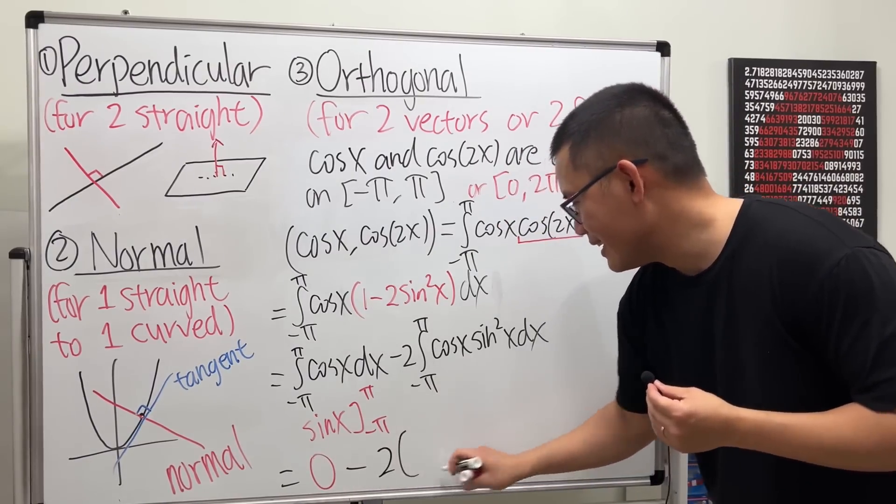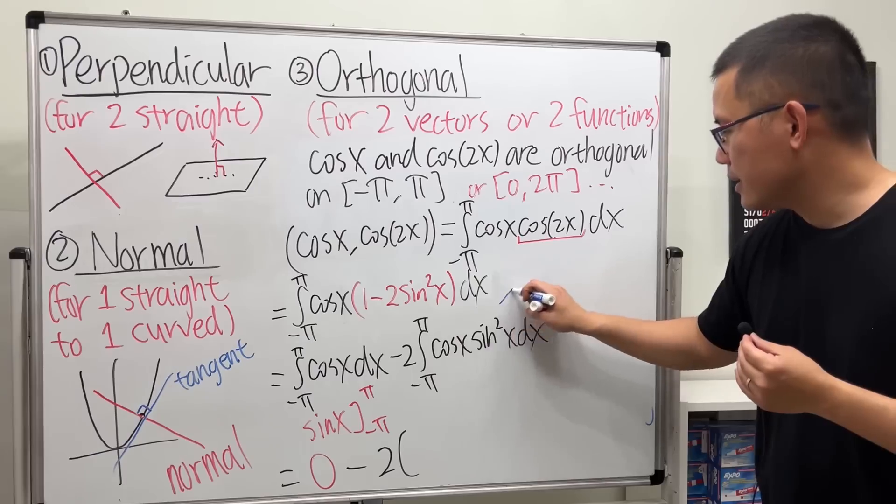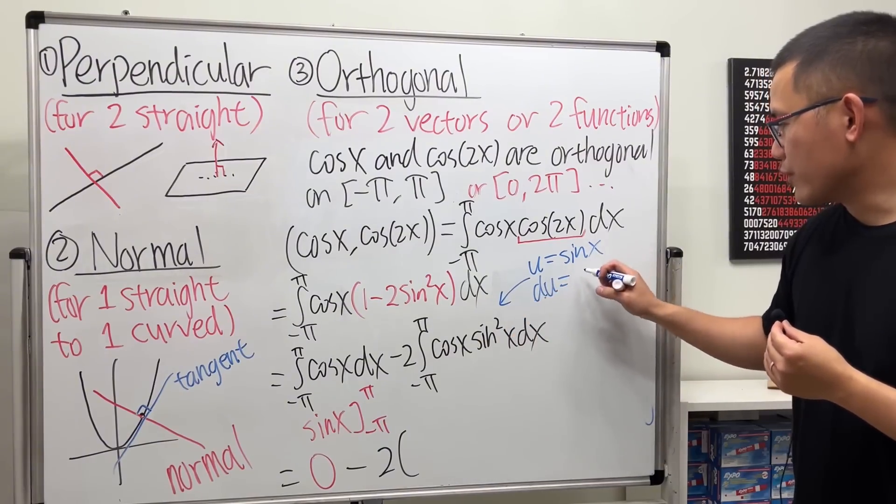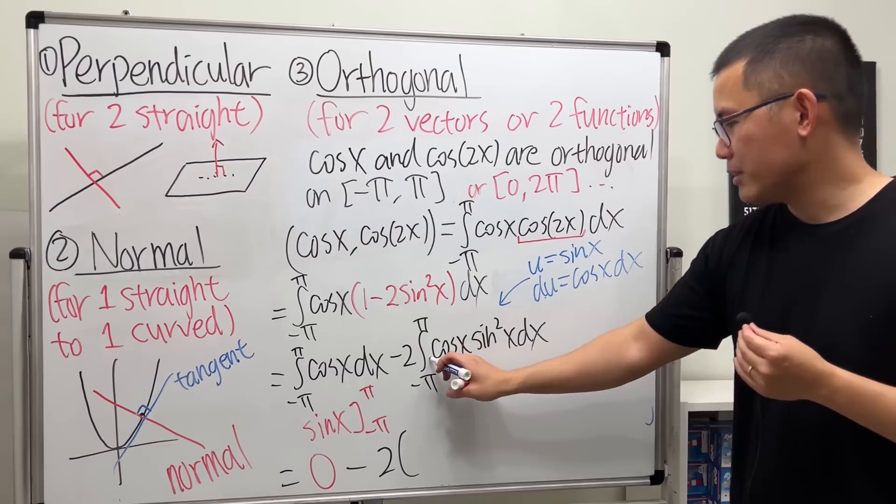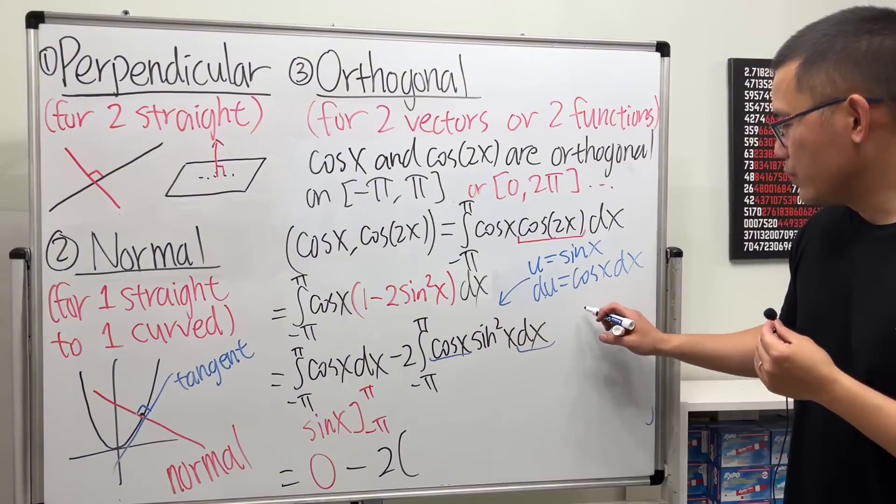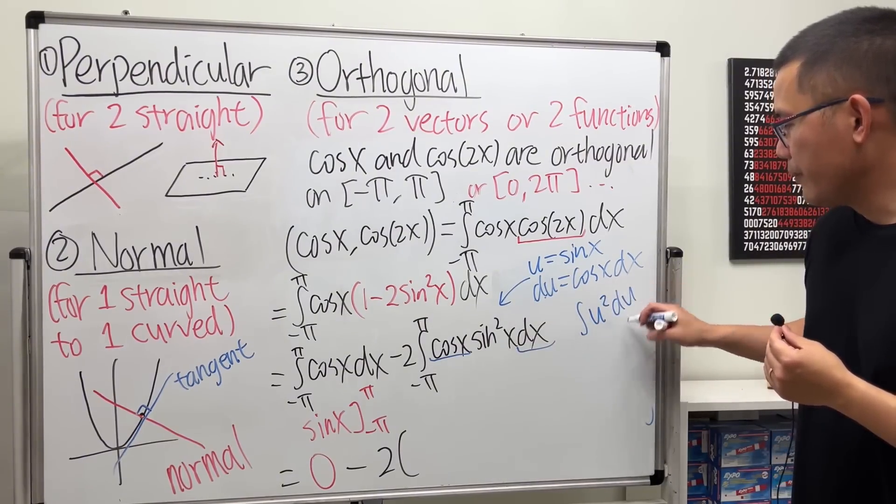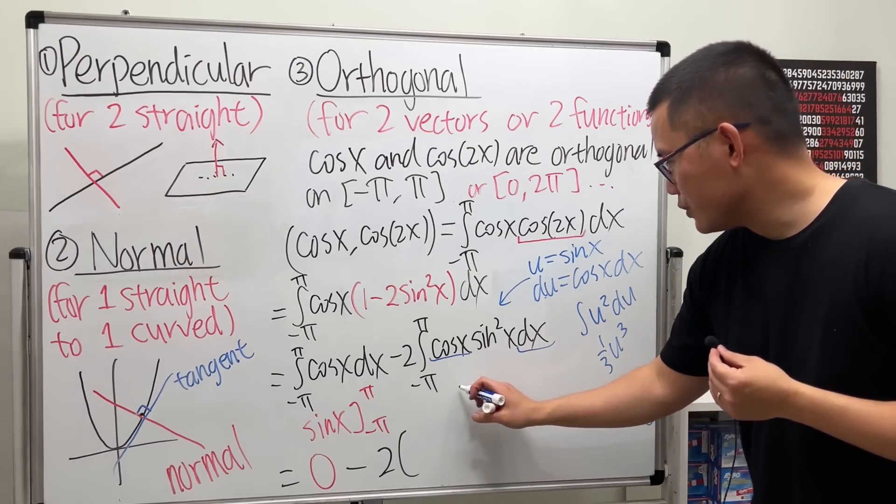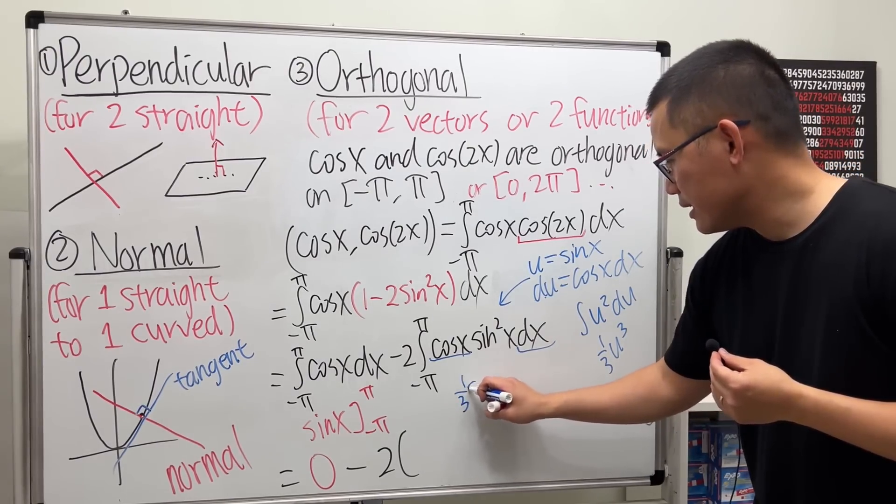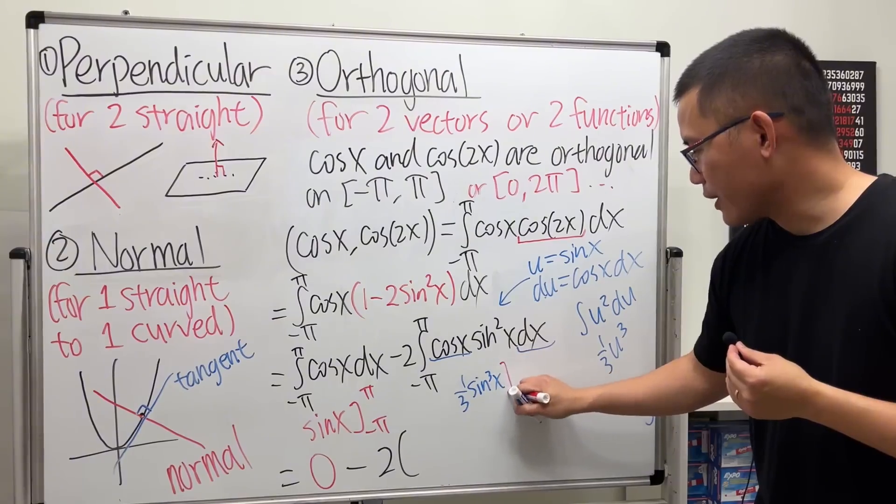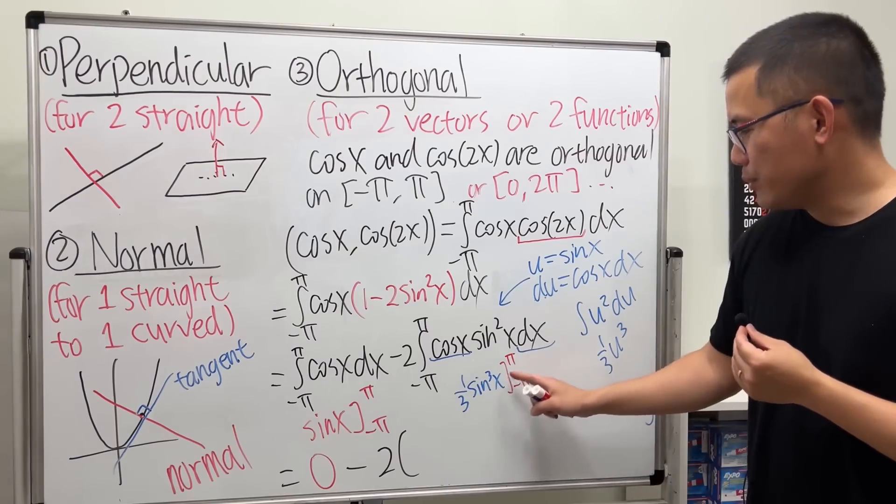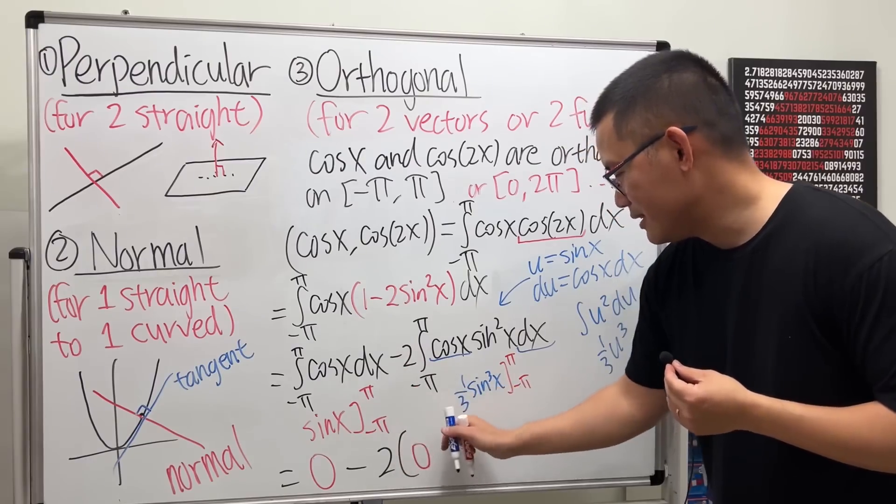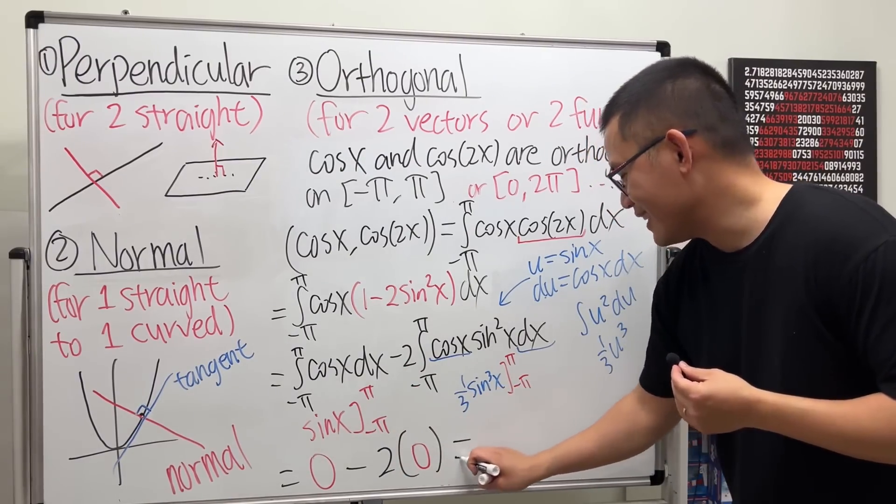For the next one, here we'll just have to do a quick u-substitution. Let u equal sin(x), and then du equals the derivative of that, which is cos(x)dx, which we happen to have, which is very nice. So in fact, we're just trying to integrate u² du, which will get (1/3)u³, and u equals sin(x). So in fact, here we will just get (1/3)sin³(x), and then from here we go from -π to π. But guess what? When you put π in here, you get 0, when you put -π here, you also get 0. So -2 times this 0, very nice. And you get 0.